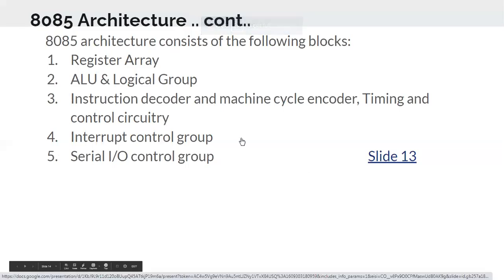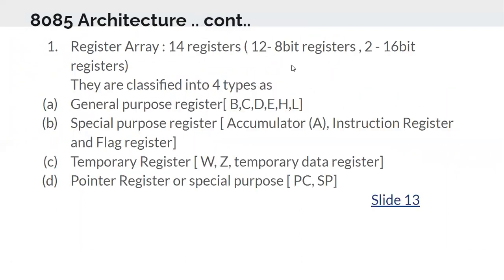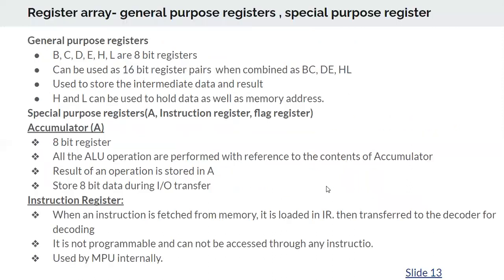We have already seen the first part — the register array — which has 14 registers. Twelve of those are 8-bit registers and two are 16-bit registers. The 8-bit registers are B, C, D, E, H, L, accumulator, instruction, flag, W, Z, and temporary data registers. The last two — the program counter and stack pointer — are 16-bit registers used to store memory addresses, since the memory address is 16-bit.